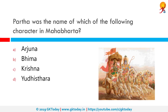Parth was the name of which of the following characters in the Mahabharata? The correct answer is Arjuna. From Preetha comes the word Parth. Arjuna was the favorite of Lord Krishna, who lovingly used the name Parth, associated with Arjuna's mother Preetha, also known as Kunti.